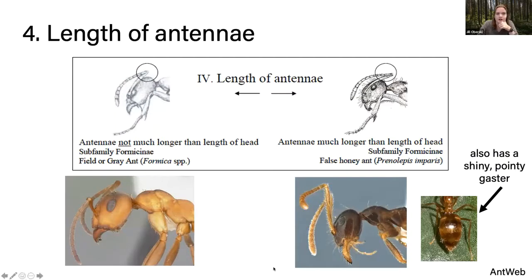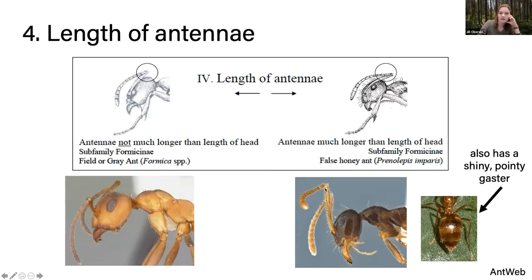The next informative feature is the length of the antennae. Formica has very short antennae, whereas other formicines like Prenolepis have antennae far longer than the length of the head. The important thing to look at is the scape — the long segment — because ants have elbowed antennae. We're assessing the length of just the antennal scape. Prenolepis will also have a very shiny pointy gaster — very plump and shiny. I can always tell Prenolepis with the naked eye in the field because of those very shiny pointy gasters.